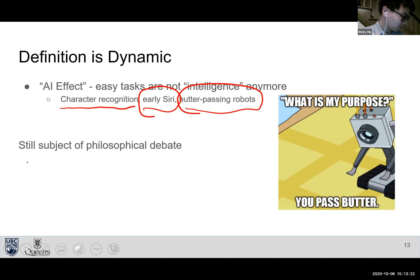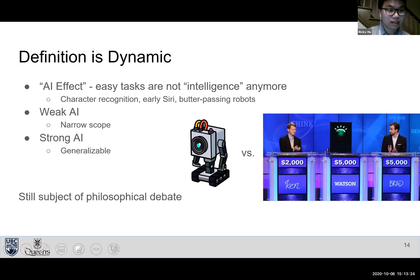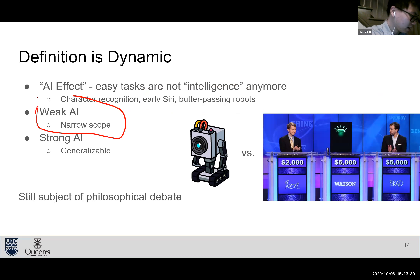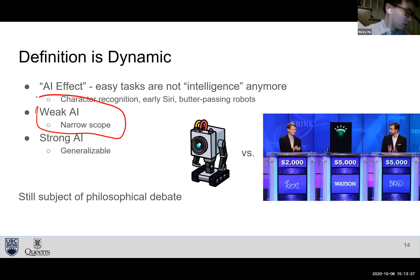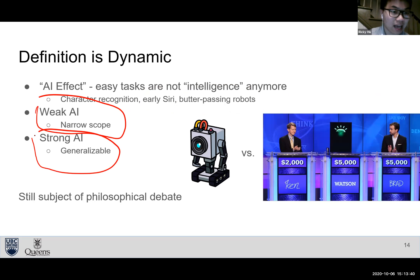This gives rise to the distinction between weak AI and strong AI. Weak AI has a narrow scope — only one task, like a robot that only passes butter. Strong AI involves more generalizable tasks — more like a fully sentient robot from your favorite science fiction.